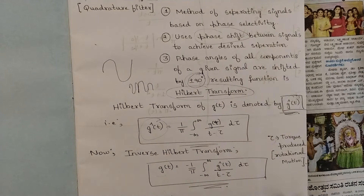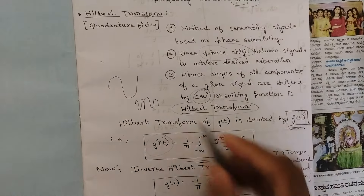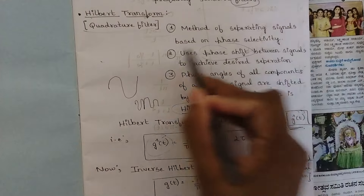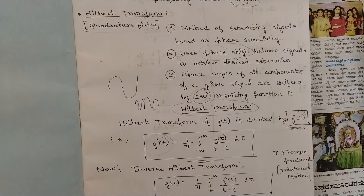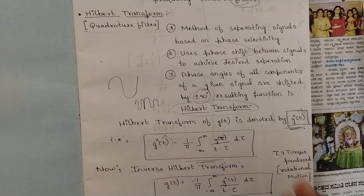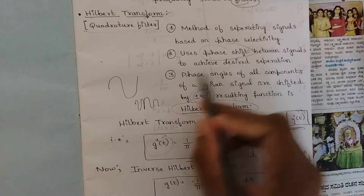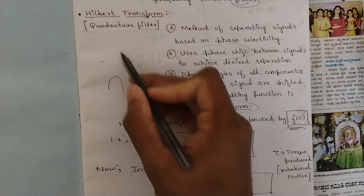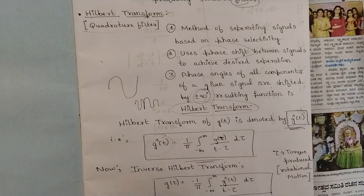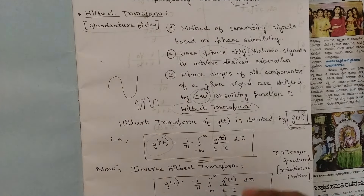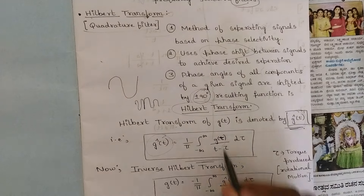The Inverse Hilbert Transform is represented as: g(t) = −(1/π) ∫ from −∞ to +∞ of ĝ(τ) / (t − τ) dτ. To recap: Hilbert Transform is also called a quadrature filter — it separates signals based on phase selectivity using phase shifts of plus or minus 90 degrees. A simple example is that a sine wave shifted by ±90° becomes a cosine wave.